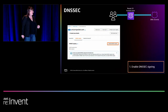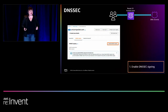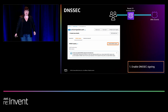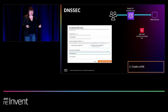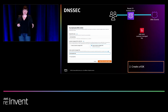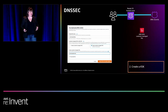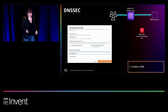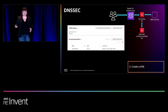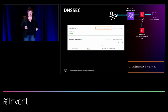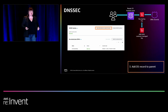Let's see how we set up DNSSEC for unicornpacket.com. Head over to the hosted zone, and simply select Enable DNSSEC Signing. Next, you create or choose a customer-managed key — CMK. This CMK will be used to sign a KSK, the key signing key. That KSK is going to be used to sign the zone and any subsequent records.